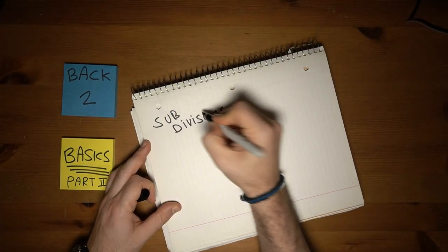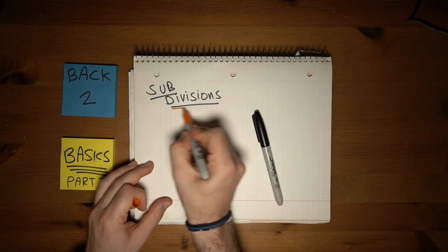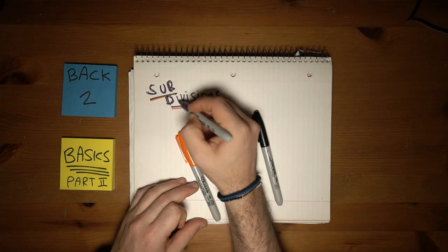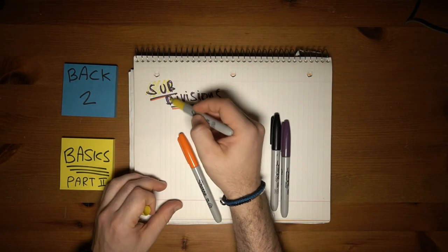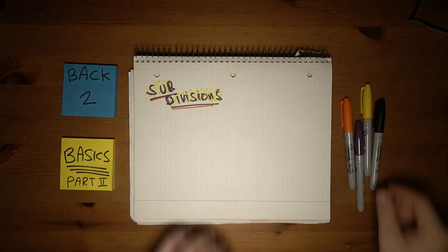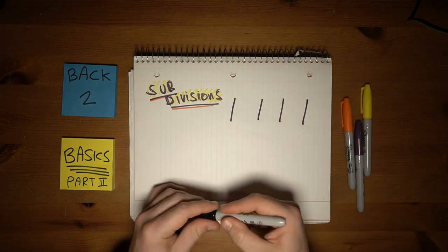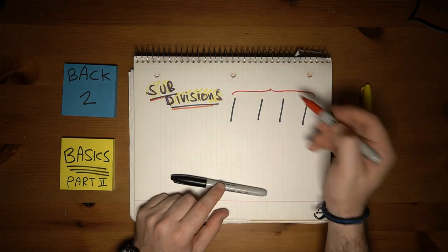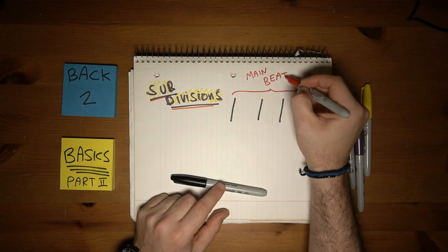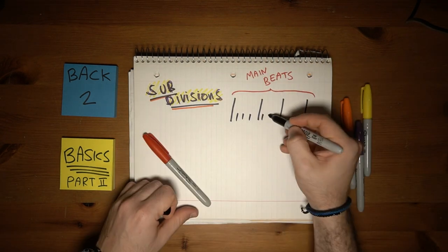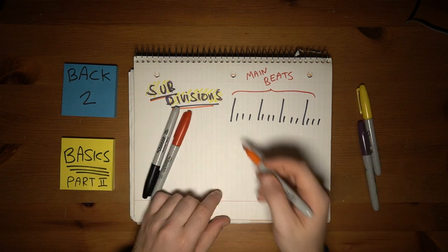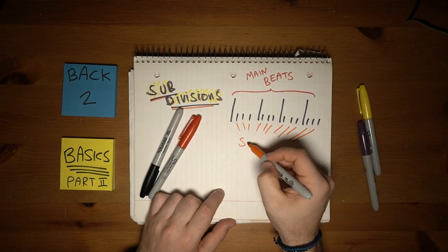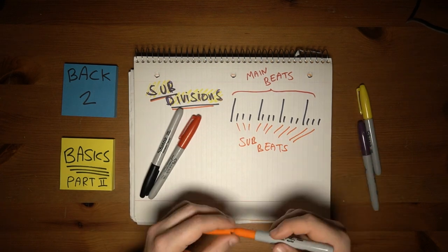Last week we defined time signatures as the amount of equal beats we have in a bar. Today, we'll talk about the ways we divide each of those main beats into sub-beats, or in musical terms, subdivisions.